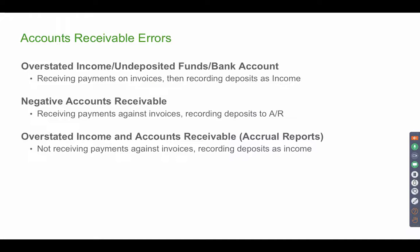You can also have overstated income and overstated AR if you create the invoice and record the deposit as income but never mark the invoice paid. If you skip receiving the payment and just create the invoice and the deposit, your income will be doubled — you'll have income from the invoice and income from the deposit. Long story short: always follow the three-step process — Create Invoice, Receive Payment, Make Deposit.